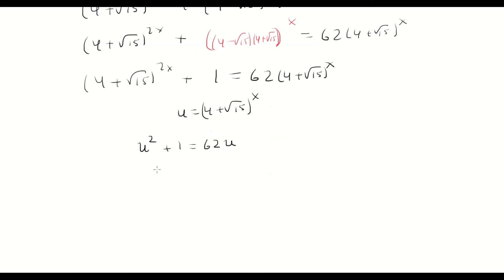We'll bring the 62u over, and from here we're going to solve it using quadratic formula. So we need to take 62² which is 3844 minus 4, so we need to take 62 plus the square root of 3840 all over 2.